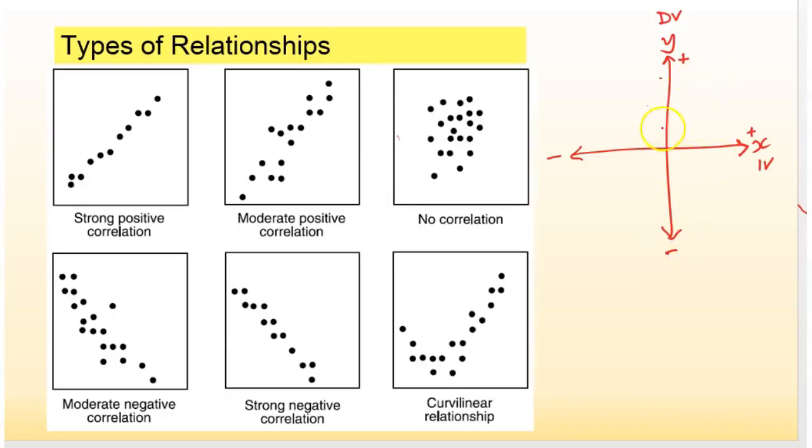So if we have a line that's going like this, that means as one variable increases the other variable increases as well. We call that a positive correlation just like this.